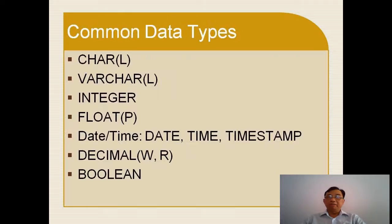Now I go to common data types. As I told you before, you have character, variable character, integer, float, variant type, decimal, and boolean.